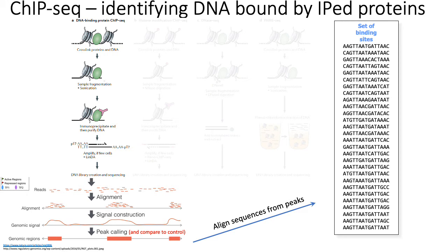What you should end up with is a bunch of reads which correspond to regions of the genome proximal to where your transcription factor bound the genome. You can take those reads and align them against the genome, and then basically do what's called peak calling, which is the task of identifying where across the genome you saw a lot more reads aligned to that region than you'd expect by chance, suggesting that your TF of interest is binding to that particular peak or region.